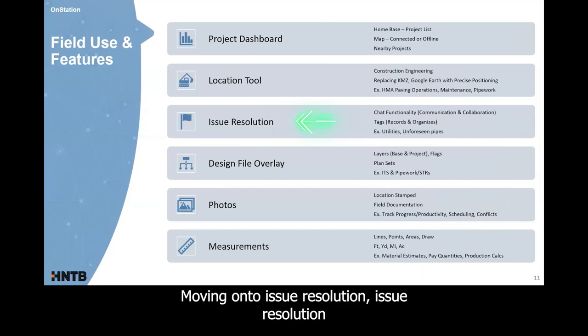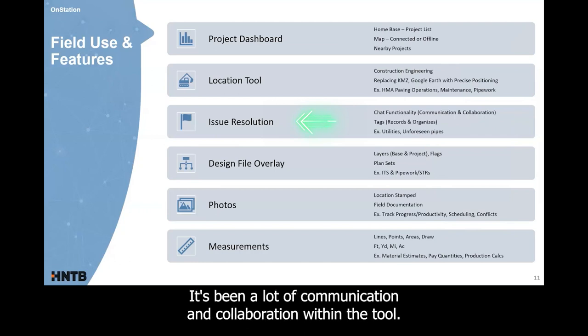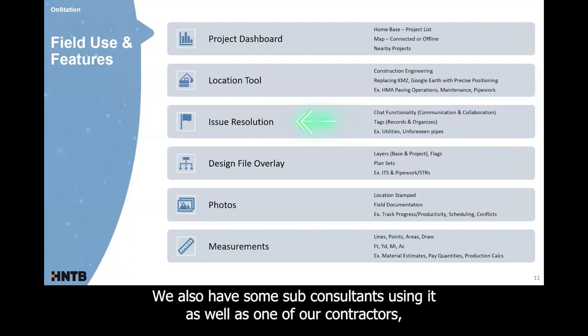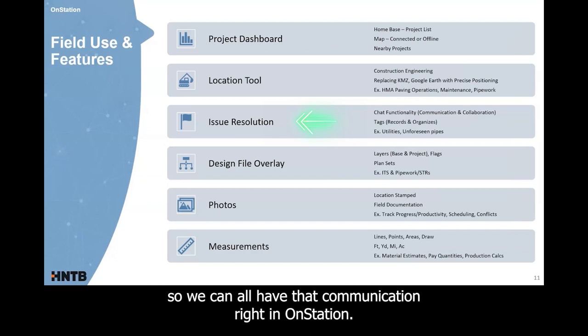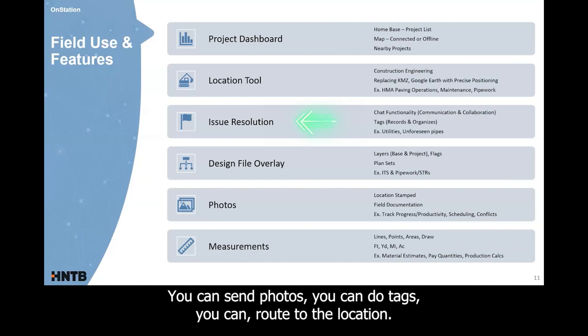Moving on to issue resolution. Issue resolution has been big as far as what OnStation can provide with the chat functionality. It's been a lot of communication and collaboration within the tool. The nice thing about both I-69 and North Split is that on I-69 we have ourselves using it internally. We also have some sub consultants using it as well as one of our contractors. So we can all have that communication right in OnStation. We're not sending emails. We're not making phone calls, sending group texts. It's all in one spot. You can send photos. You can do tags. You can route to the location. It's super beneficial. On North Split, our client INDOT is actually using it along with us and so they've had conversations using that.